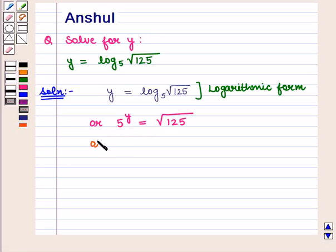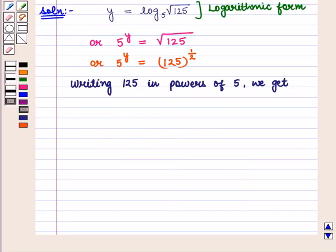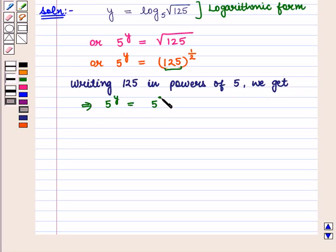We can also write this equation as 5 raised to power y is equal to 125 raised to power 1 upon 2. Now writing 125 as a power of 5, we get 5 raised to power y is equal to 5 raised to power 3, whole raised to power 1 upon 2.